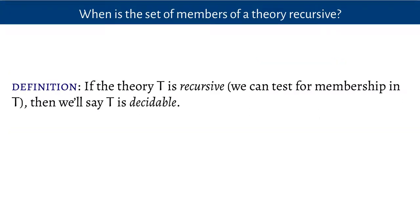If the theory's membership is recursive — if we can test for membership using some recursive function — then we'll say that the theory is decidable. These are theories where we've got some recursive process or recursive function which returns yes or no: yes if something's in the theory, and no if it isn't. Because it's recursive, that's guaranteed to terminate, so we'll always get an answer. We might be left hanging for a very long period of time, but never forever. So this is a really interesting question: which theories are genuinely recursive in that sense? Which theories are decidable? Are there undecidable theories?